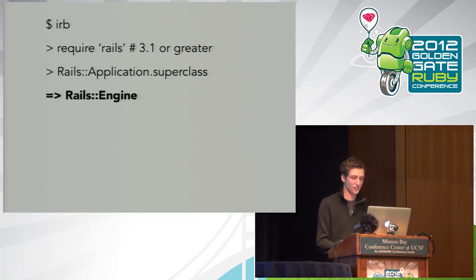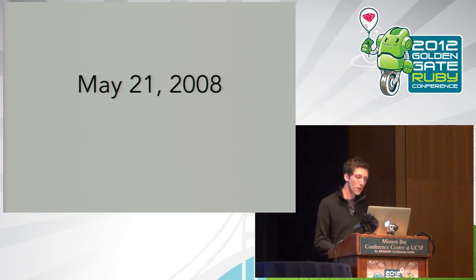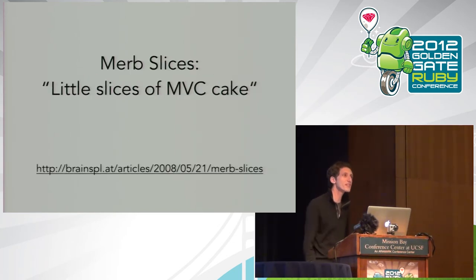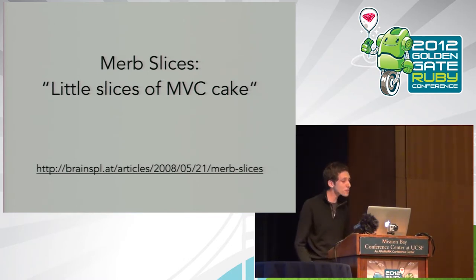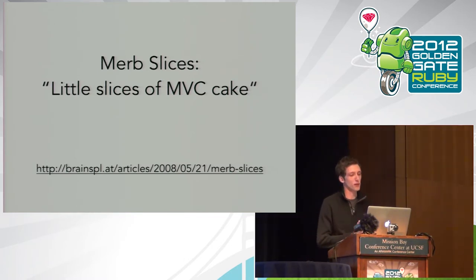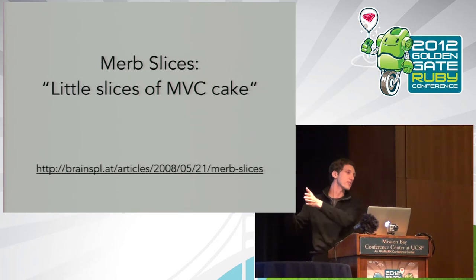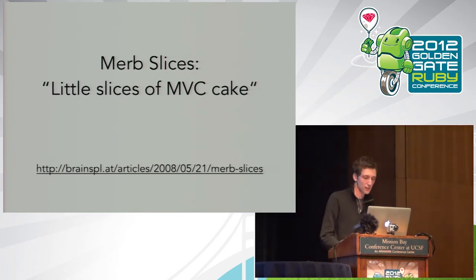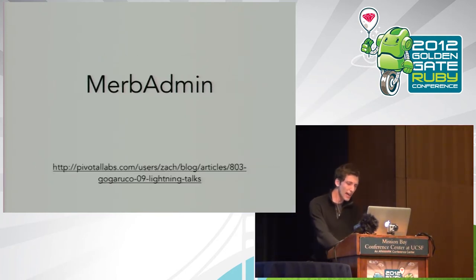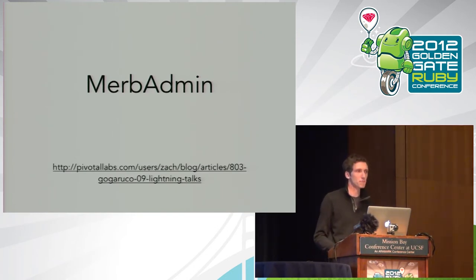The next historical point was May 21st, 2008. Ezra Zygmuntovich wrote a blog post introducing Merb slices — basically the same idea as engines, but for Merb. They were 'little slices of MVC cake': a vertical slicing of an application where you can slice out little bits of functionality and plug those into another application. That's actually how I got involved in the whole story — I was using Merb at the time.